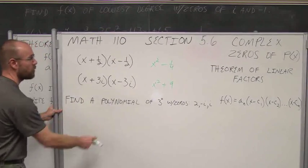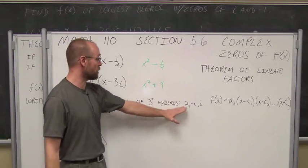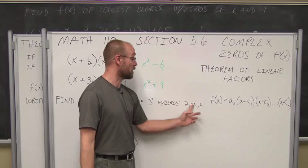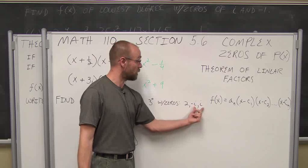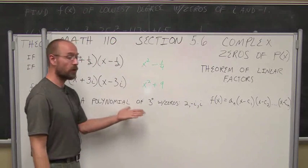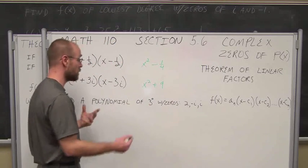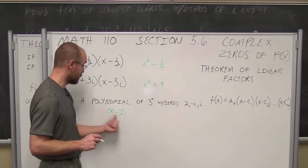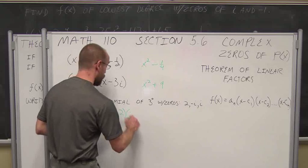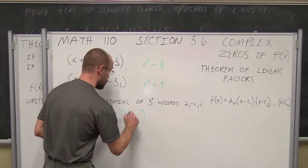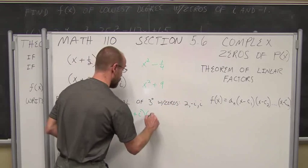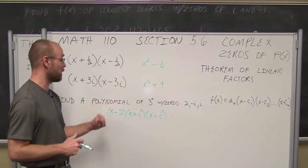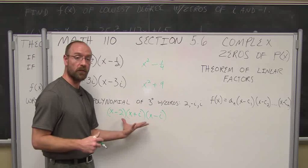Let's look at finding a polynomial with given zeros. We're looking for a polynomial of third degree with zeros of 2, negative i, and i. These are conjugates, and they're also in the complex number system. So let's begin by writing it as linear factors. The first one: 2 is a zero, so we have x minus 2. We also have the factor x minus negative i, which is x plus i, and x minus positive i, which is just x minus i. So we write it as a product of linear factors, and we want to find the polynomial of third degree.